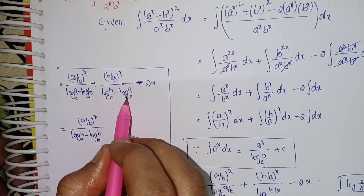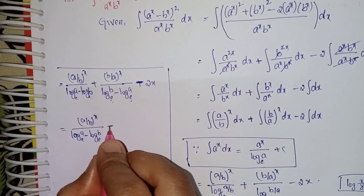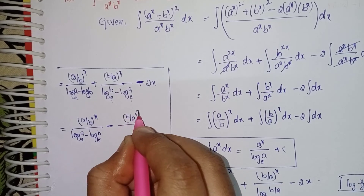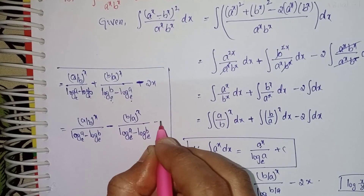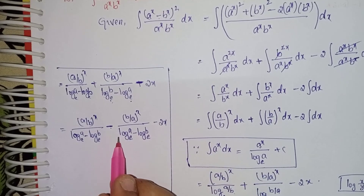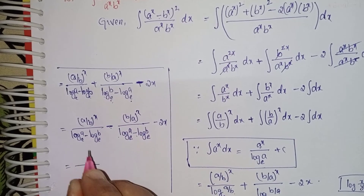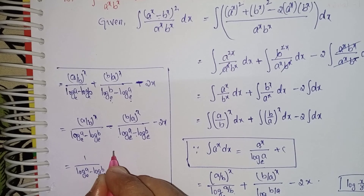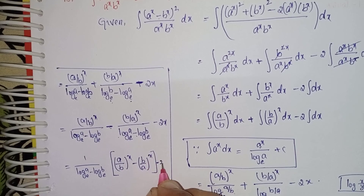Rearranging, write the denominator of the second term as negative: (b/a)^x divided by (minus log a base e plus log b base e). Taking out the negative sign and factoring, both terms share the common factor 1 over (log a base e minus log b base e). So the expression becomes: (1 / (log a − log b)) times [(a/b)^x minus (b/a)^x], minus 2x, plus c.